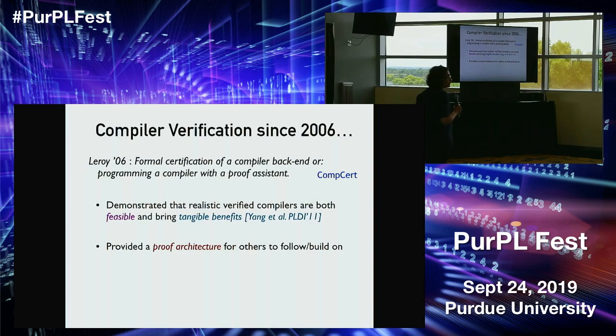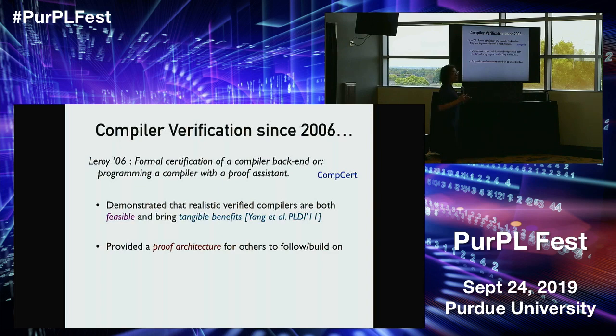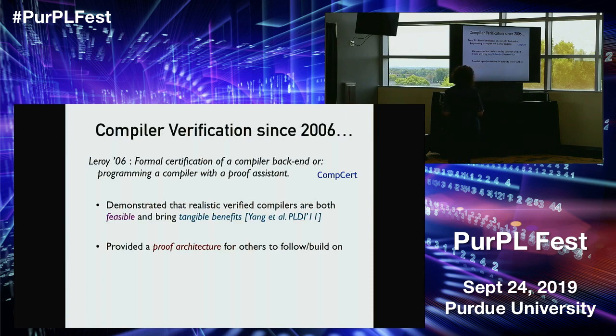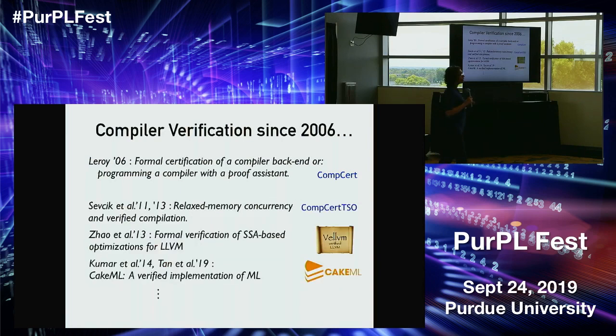The work on CompCert was really exciting for the community because it showed that you can actually implement a full-fledged compiler with a fair amount of optimizations using a proof assistant. Before this 2006 paper, most of the community would have found that surprising. Since then, once it was demonstrated that you can build realistic verified compilers that have benefits for actual users — as the PLDI '11 paper showed — a whole bunch of people started doing proof mechanization and proving their compilers correct.